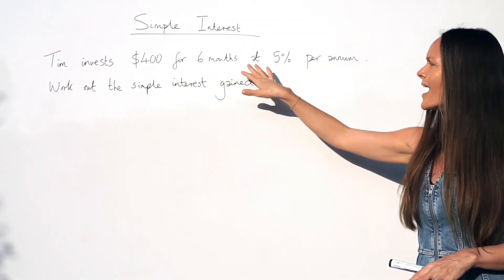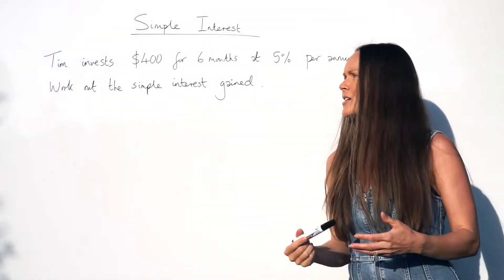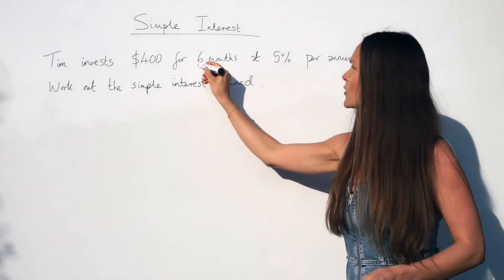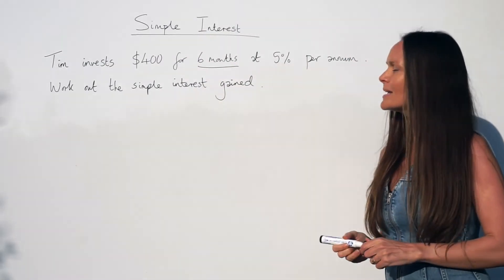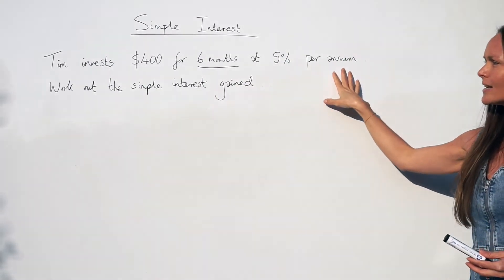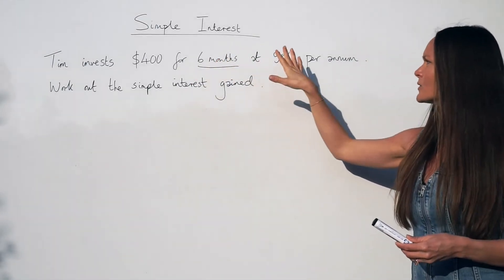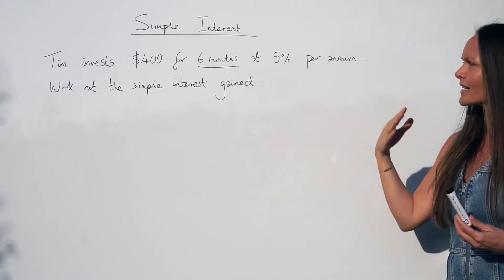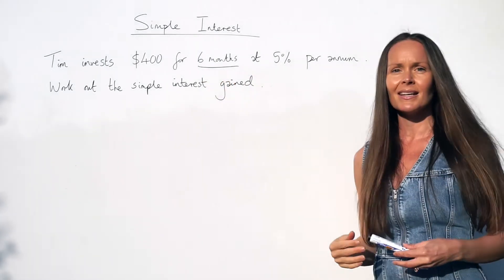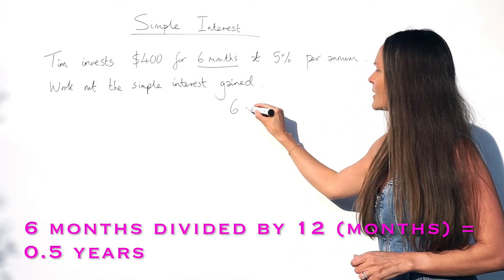In the next question it says: Tim invests four hundred dollars for six months at five percent per annum — work out the simple interest gained. It's very similar to the last one, except we need to be careful because the duration of time is in months, and remember the rate of interest is per annum, meaning each year. So before we multiply the money by the length of time by the rate of interest, we need to make sure our six months are written in years.